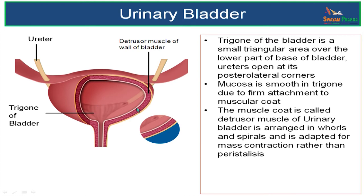Mucosa over the trigone is smooth because of the firm attachment to the muscular coat. The muscle coat of the bladder is called the detrusor muscle. It is arranged in whorls and spirals, and it is adapted for mass contraction rather than peristalsis.